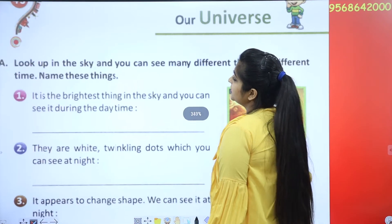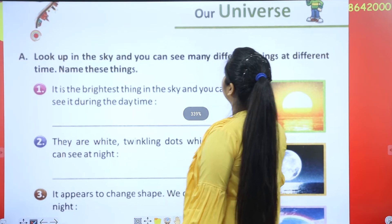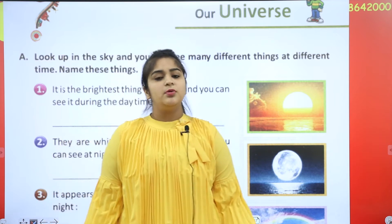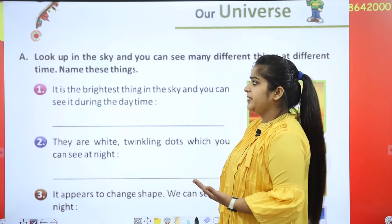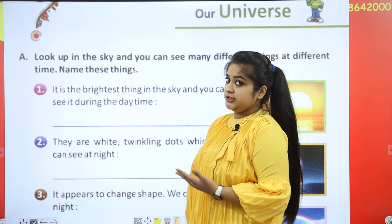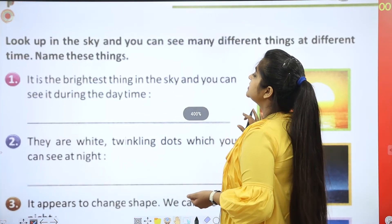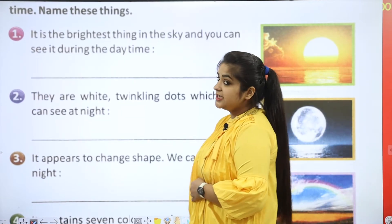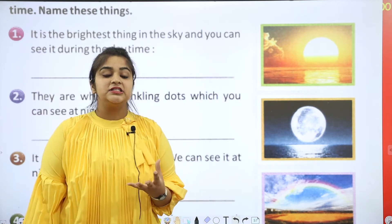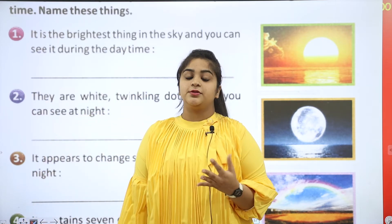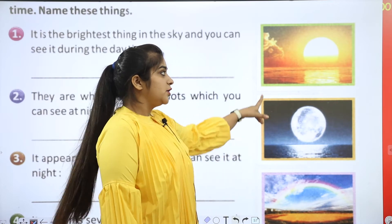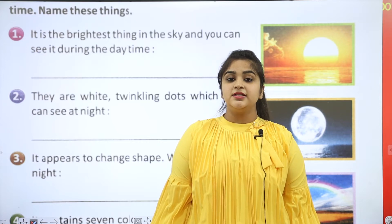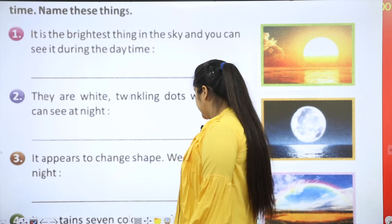You look up in the sky and you see many different things at different times. It is the brightest thing in the sky and you can see it during the daytime. Which thing is the light during the day? And the answer is the sun.